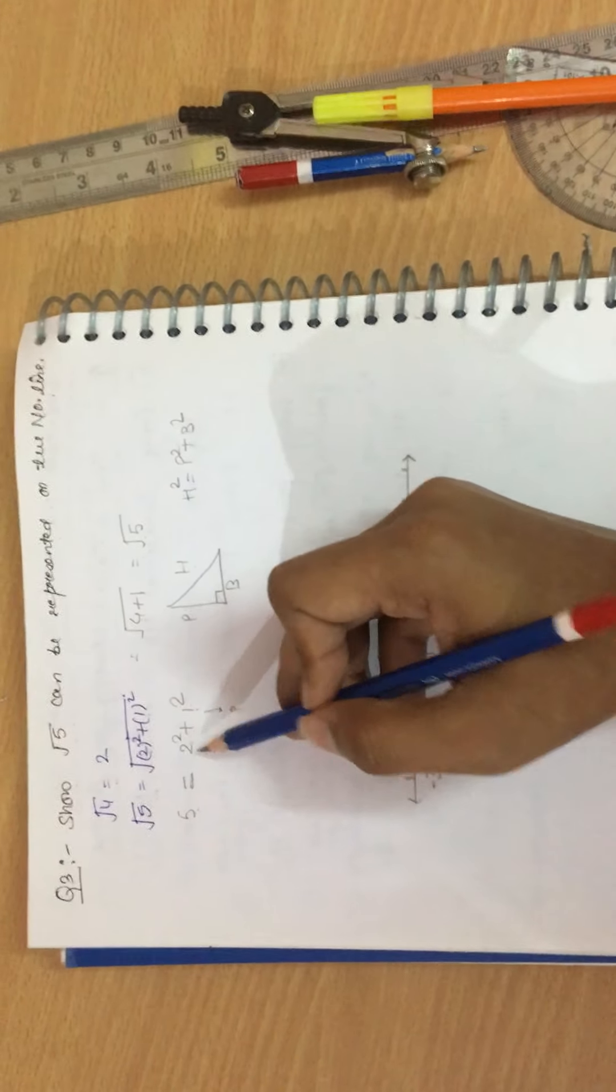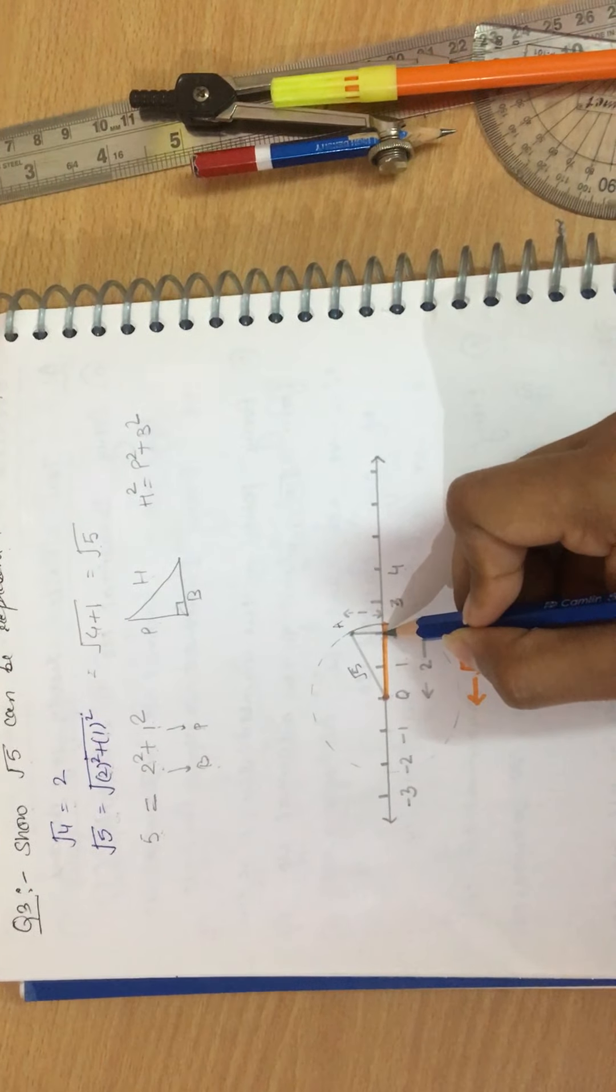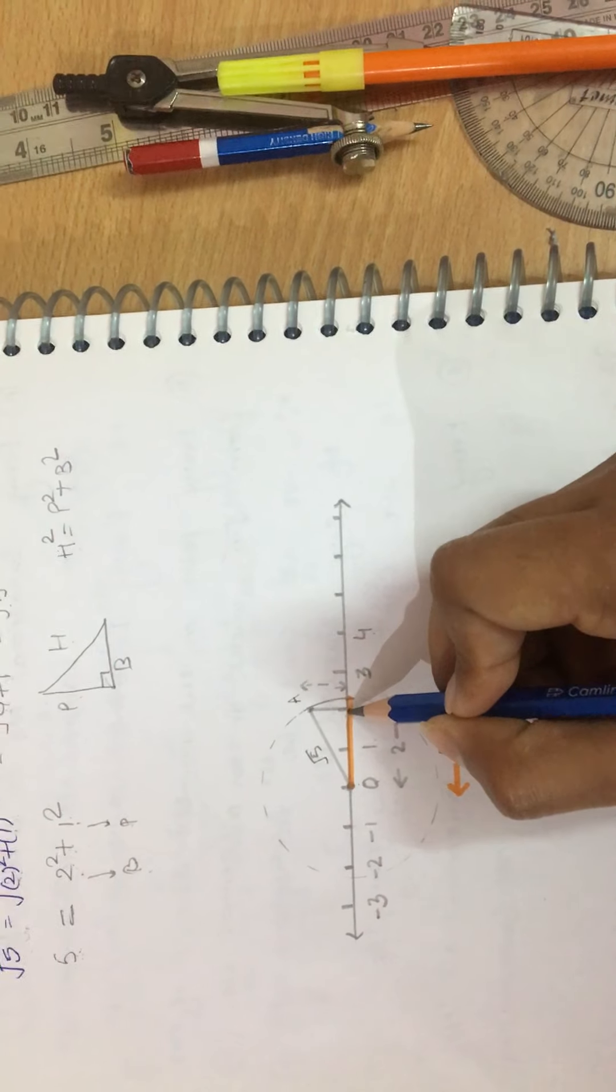We have drawn a line from scale, 1-1 cm gap. We have labeled them here, 0, 1, 2, 3 and so on. Minus 1, minus 2, minus 3 and so on.